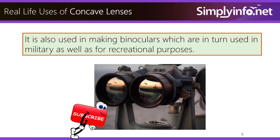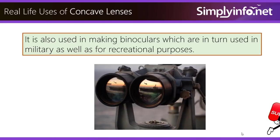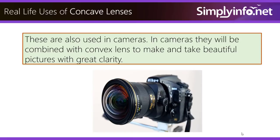Concave lenses are also used in making binoculars, which are in turn used in the military as well as for recreational purposes. These are also used in cameras, where they are combined with convex lenses to take beautiful pictures with great clarity.